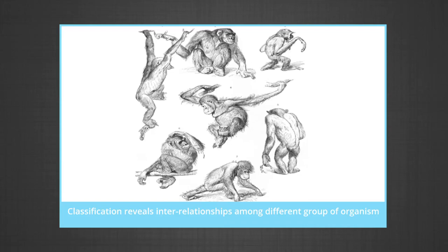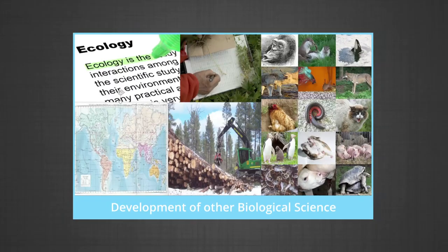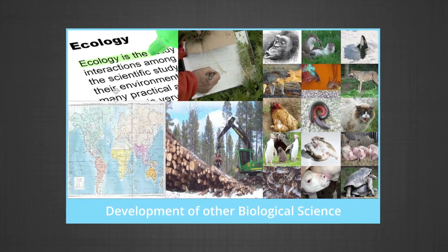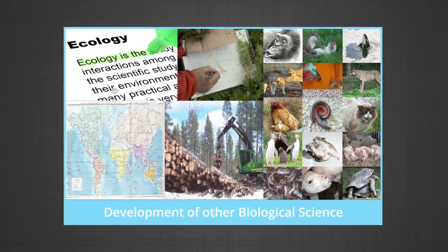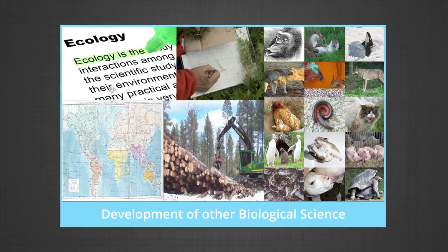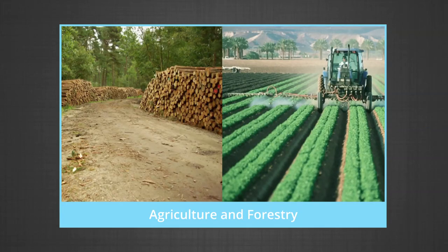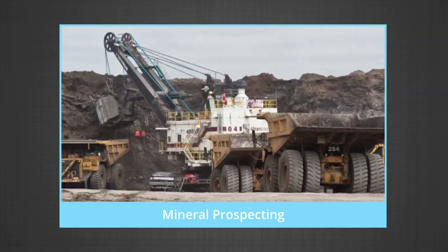Classification is essential to understand the interrelationships among different groups of organisms. It helps in the development of other biological sciences — classification provides information for the development of branches such as biogeography, ecology, ethology, forestry, and many more. In agriculture and forestry, taxonomic knowledge provides vital information about pests, pathogens, and hosts. In mineral processing, taxonomy gives the correct sequence of geological events in a particular area and is basic to the search for fossil fuels and mineral deposits.